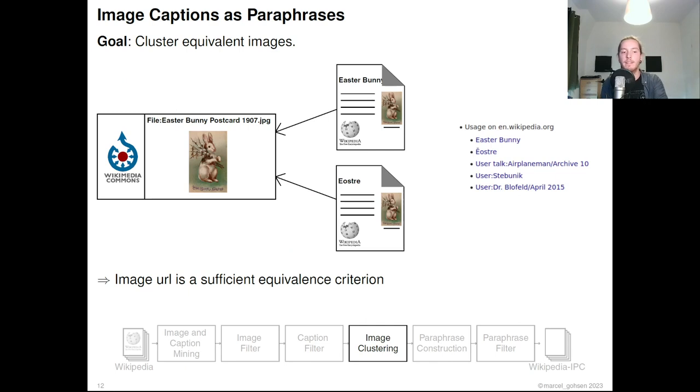The next step is to cluster all equivalent images and their captions. All images that are used in Wikipedia articles are hosted by Wikimedia Commons. Wikipedia articles refer to these images by their Wikimedia image URL. Wikimedia regularly checks for their uses, which you can see on the right, and for duplicates. Thus, the image URL is a sufficient equivalence criterion.